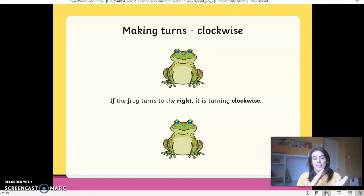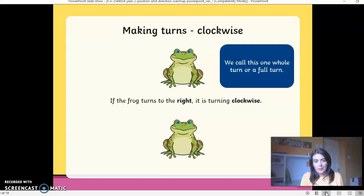Making turns. So looking at making turns clockwise. So here we have the frog. If the frog turns to the right, this is my right hand because I know it's not the capital L. It is turning clockwise. So let's have a look and see if he turns to the right. So he has just went the whole way around. We call this one whole turn or a full turn.